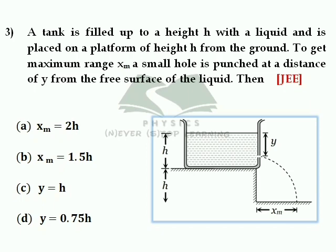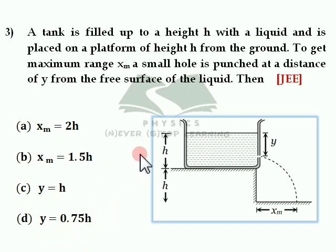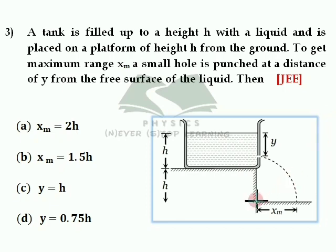A tank is filled up to a height h with a liquid and is placed on a platform of height h from the ground. To get maximum range xm, a small hole is punctured at a distance y from the free surface of the liquid. The height of the platform is h and the height up to which water is filled in the tank is also h. So the total height from the ground to the top of the water surface is h plus h, which is 2h.